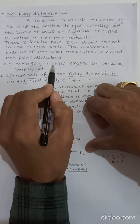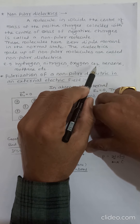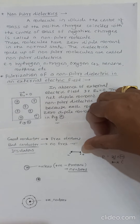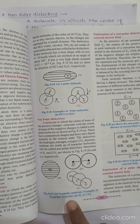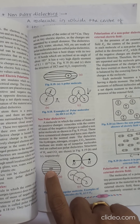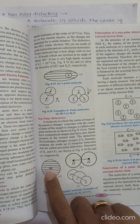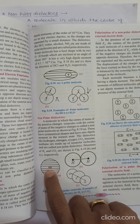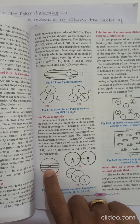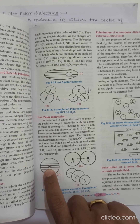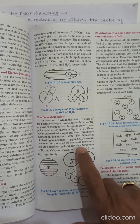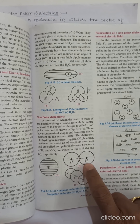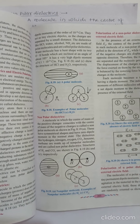Examples of non-polar dielectrics include hydrogen, nitrogen, oxygen, CO2, benzene, methane, etc. In the figure of a non-polar substance, the center of mass of positive charge and the center of mass of negative charge coincide with each other. There is no actual distance between them, and therefore the dipole moment of such a molecule is zero. Hydrogen is shown as an example — because of the symmetric nature, the dipole moment is zero.